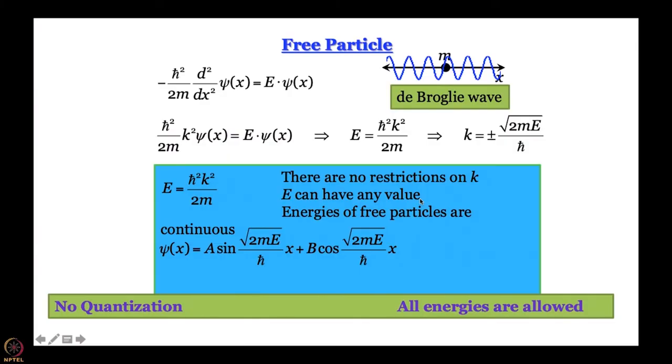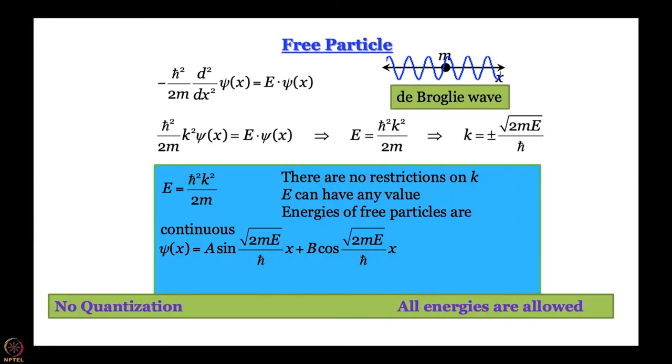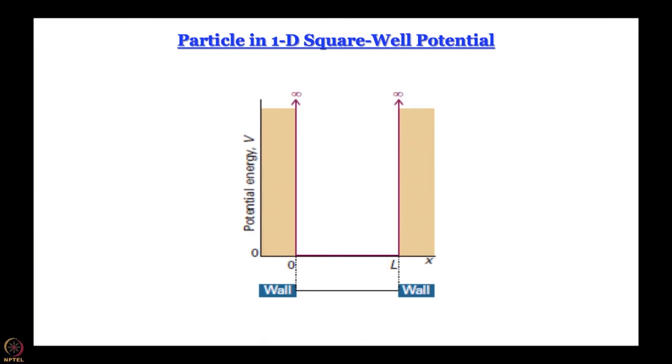Do we have quantization? Actually, we do not. We do not have quantization here because there is no restriction on the value of k. K can be anything, therefore E can be anything — no quantization. We will see that quantization will arise when we restrict this same free particle within some boundary, by putting it in what is called a particle in a 1D square well potential. Before we do that, we will also have more to say about whether this wave function for a free particle is really all that acceptable.